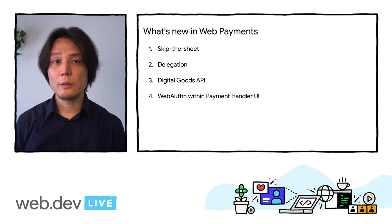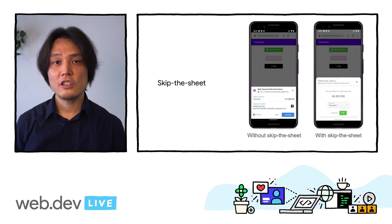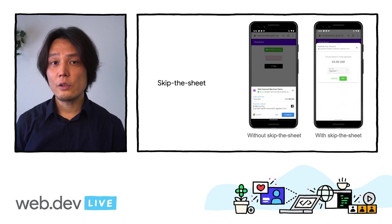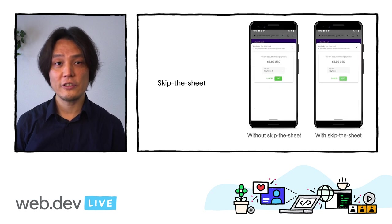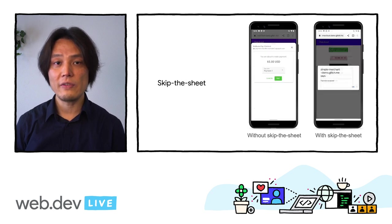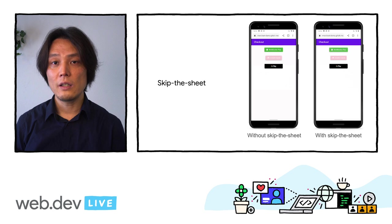Now, what's new in Web Payments? Let me cover four exciting new functionalities today. Skip the Sheet is a UX optimization that allows the user to skip directly to a payment app if there is only one eligible choice. This provides a more streamlined flow for payment apps that are launched from branded buttons.